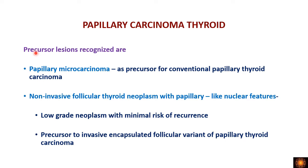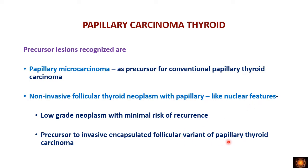Two precursor lesions have been recognized. First is papillary microcarcinoma, recognized as a precursor for conventional papillary thyroid carcinoma. Second is non-invasive follicular thyroid neoplasm with papillary-like nuclear features (NIFTP), a very low-grade neoplasm with minimal risk of recurrence, considered a precursor for the follicular variant of papillary thyroid carcinoma. Papillary microcarcinoma is precursor for conventional PTC, whereas NIFTP is precursor for the follicular variant.